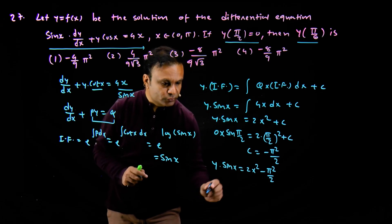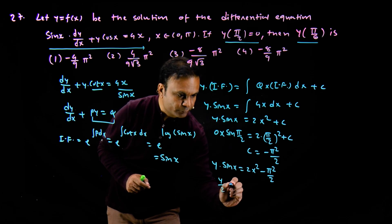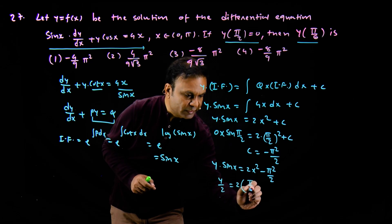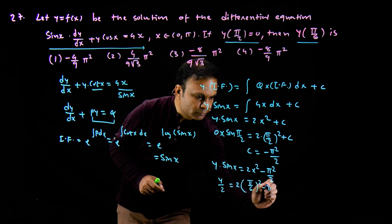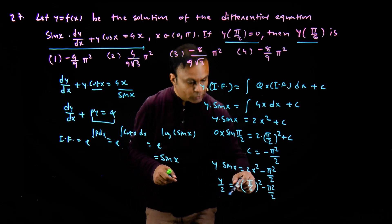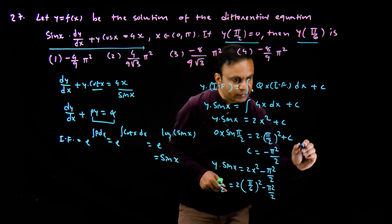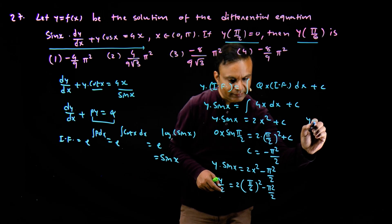Sin pi by 6 value becomes half, so this becomes y upon 2 is equal to 2 multiply by pi upon 6 square minus pi square upon 2. We multiply the entire equation by 2, so this becomes y is equal to...